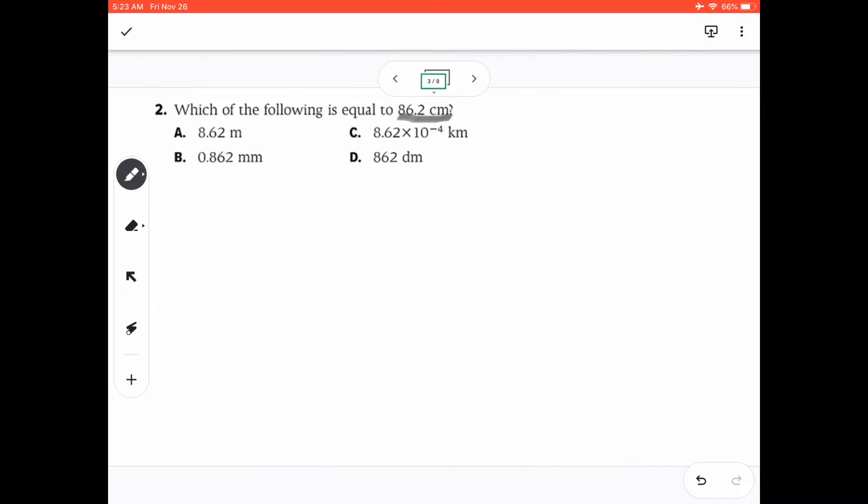So first, we're going to change 86.2 cm to meters, so that will be multiplied to the conversion factor of 100 cm. We're going to put centimeters below because we're going to cancel it as equal to 1 m because we want to change it to meters. Centimeter and centimeter will be canceled. 86.2 divided by 100 is 0.862 meters, which eliminates our letter A answer.